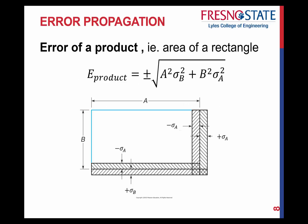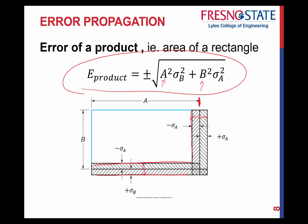Now if we had a product — for example, figuring out the area of something — here's your formula for that. A and B are your lengths, and you have the variance of B and the variance of A, with the standard deviation of A and standard deviation of B both squared. Looking at the overall length A going across and standard deviation, you can see there's a small amount of error that sits inside there. Similarly for B. So the overall area you're calculating could fall anywhere within that error range.